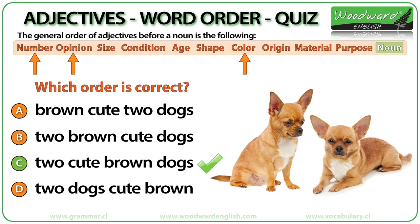Two cute brown dogs. Two is a number, cute is an opinion, and brown is a color. The correct order is: number, then opinion, then color.